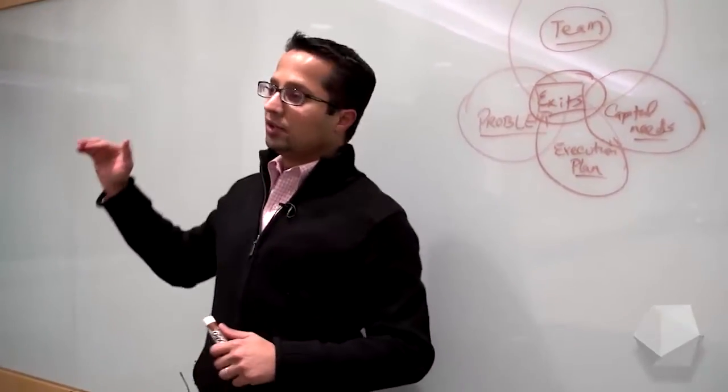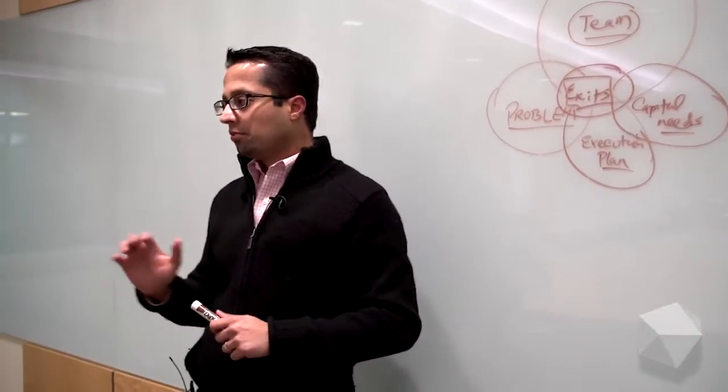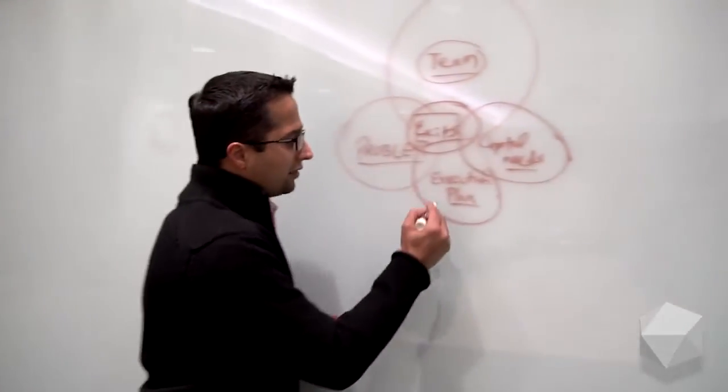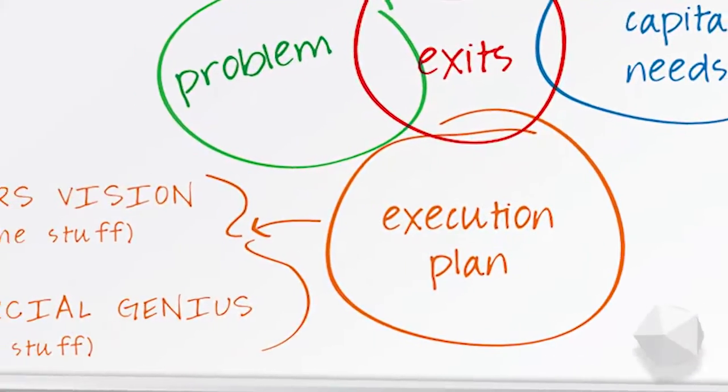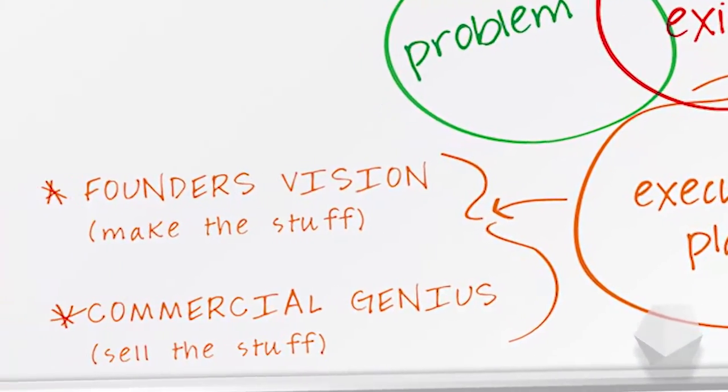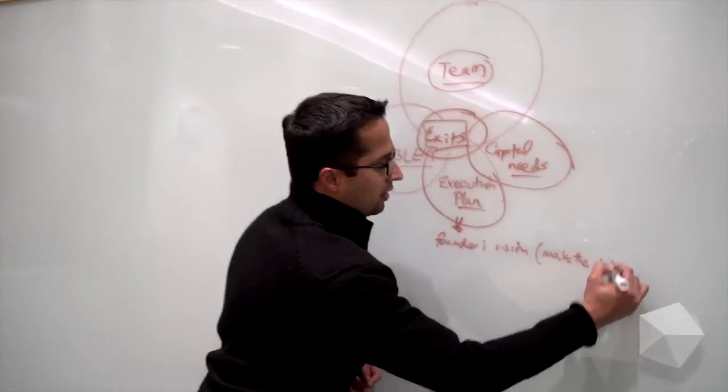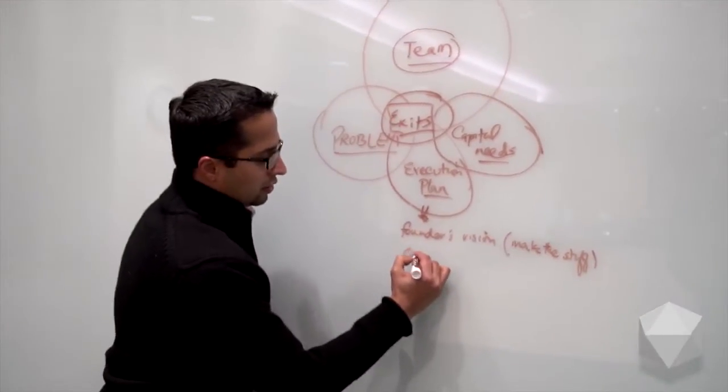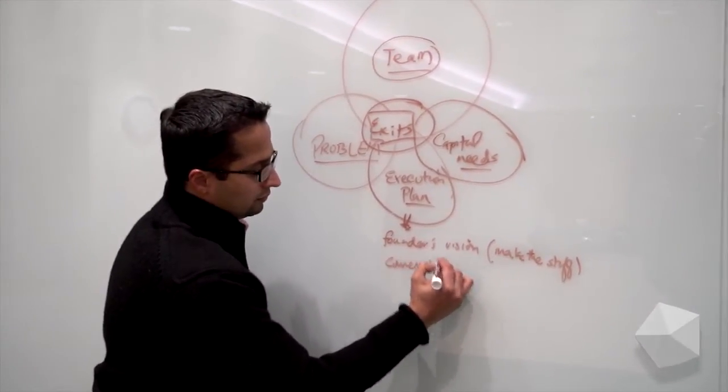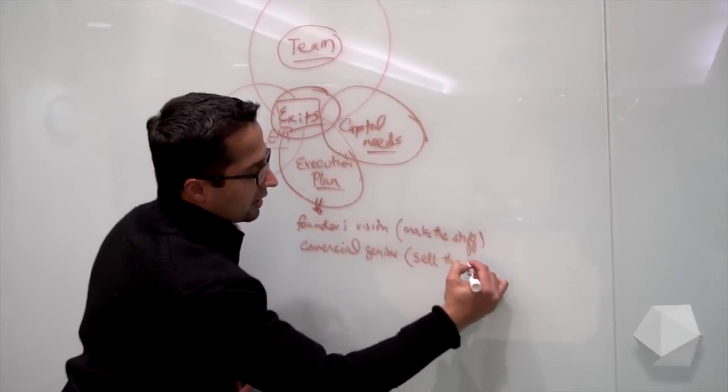I have a CEO, I have a CFO, I have a COO. That's really not the key. The most important thing is to have this execution plan acted upon. What do you need? The founder's vision, and it's usually somebody who can make the stuff. And then you have commercial genius, which is somebody who can sell the stuff.